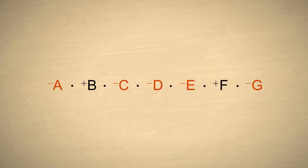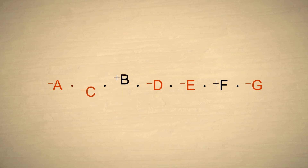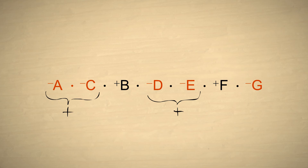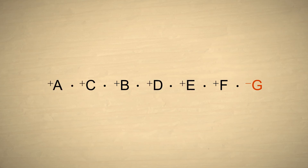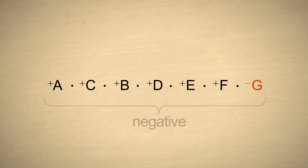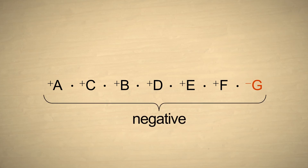Now, let's see what happens if we have an odd number of negative numbers. Once again, we group the negative numbers into pairs and change their signs. But one unpaired negative number is left. So this time, the result of the multiplication is negative.